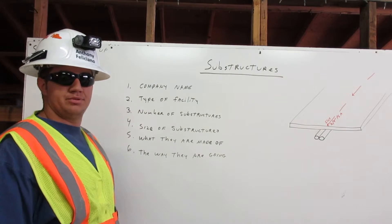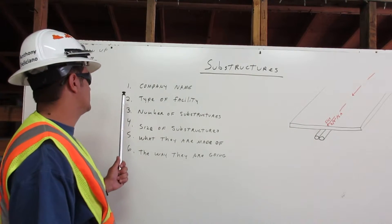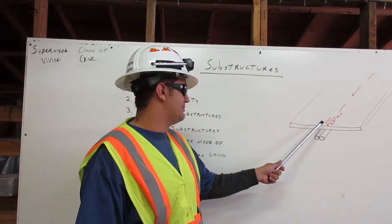Let me show you an example. Substructures. First, company name. On this illustration, the company name is Elko.